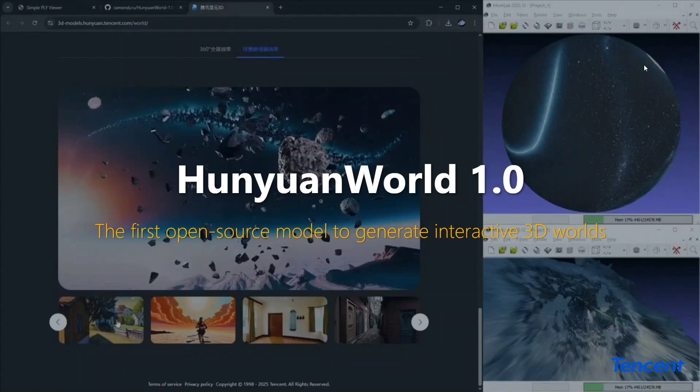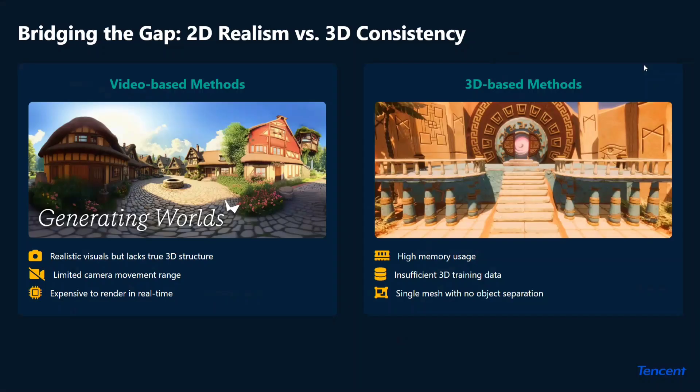HunyuanWorld 1.0 is the first open source model to generate interactive 3D worlds. There were problems with previous models: generating worlds with realistic visuals lacked true 3D structure, they looked AI-generated, and there was limited camera movement, which was very expensive to render. 3D-based methods also had very high memory usage and insufficient 3D data.